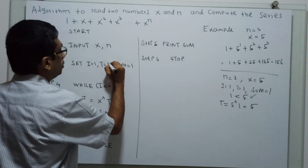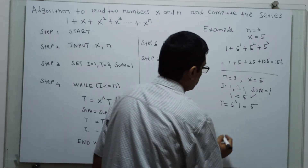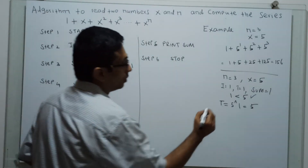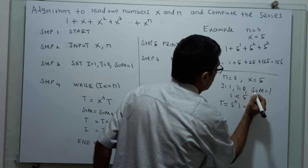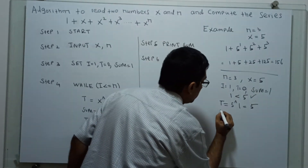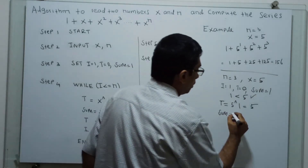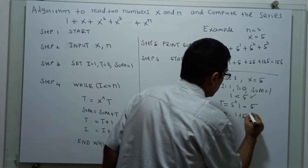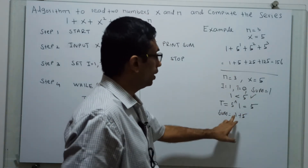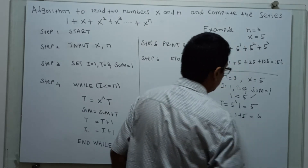Note: initially the value of t should be 0, not 1. So t equal to 5 now. Then sum equal to sum plus t — the existing value of sum is 1, plus 5. The 1 stands for x power 0, which is 5 power 0 equal to 1, and 5 power 1 is added. Now the value of sum equals 6.